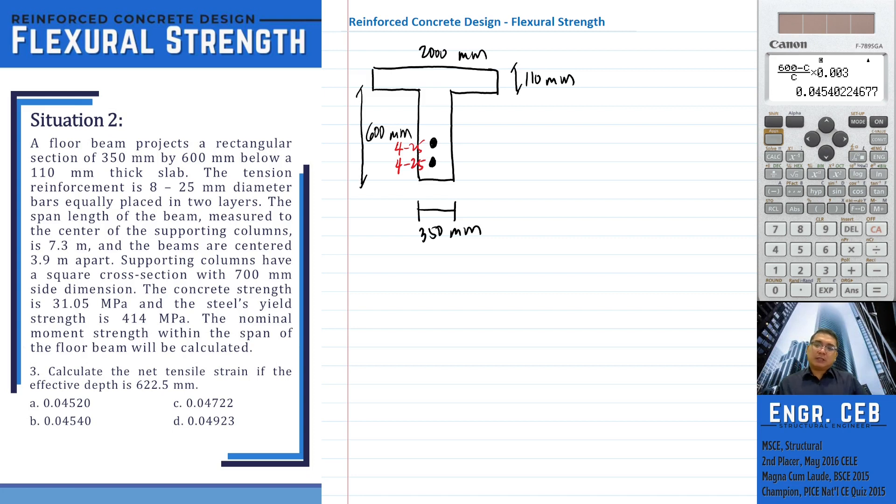Okay, so I have simplified the drawing for our T-section. So take note, based on the problem, we have 8 25mm diameter bars equally placed in two layers. So equally placed in two layers.